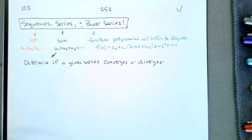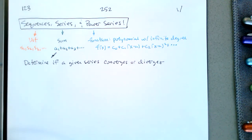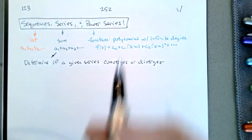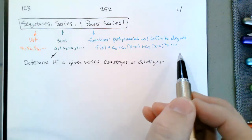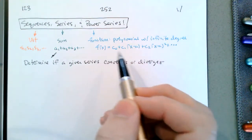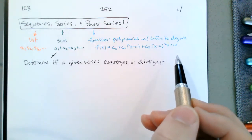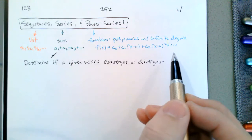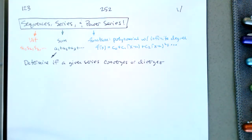Today we're going to continue looking at sequences, series, and power series. We're going to try to determine if a series converges or diverges — that is, when a sum is going to be finite. Our goal is to get to power series because these are generic, polynomial descriptions of functions. But when we plug numbers into a power series, we end up with a series, and we have to know if the sum makes sense — that is, if the sum is finite. So let's list the things we know about convergence of series.